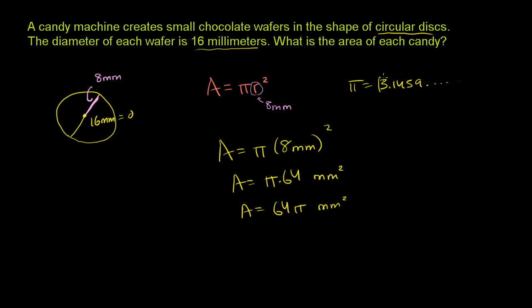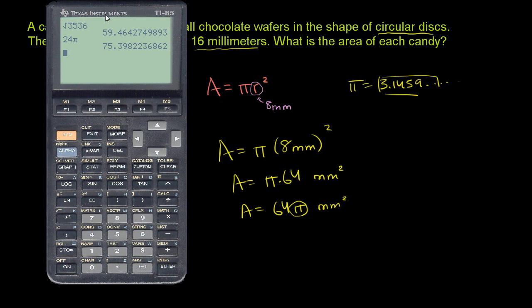So we literally could take 3.14159 and put it in the place of pi right over here. And sometimes people will approximate it with 3.14. But I'll just use the calculator to get the exact value.